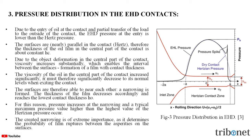The viscosity of the oil in the central part of the contact increases significantly; it must therefore significantly decrease to its normal levels when exiting the contact. The surfaces are therefore able to near each other — that is, by narrowing — and this narrowing is formed, and the thickness of the film decreases accordingly, and reaches the lowest contact thickness, which is HO.